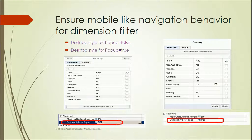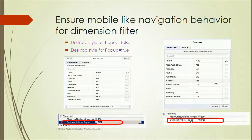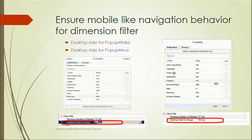For the dimension filter, there are two properties. The desktop tile for pop-up property — when it is false, the filter will have back and apply buttons, which means it is for mobile applications. When desktop tile for pop-up is set to true, the dimension filter will look different, showing options where the Apply and Back buttons are positioned differently. So these properties determine how the dimension filter behaves for mobile versus desktop. We need to use these properties while using the dimension filter.